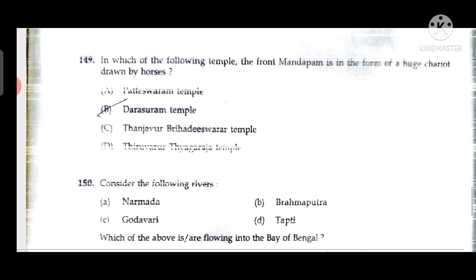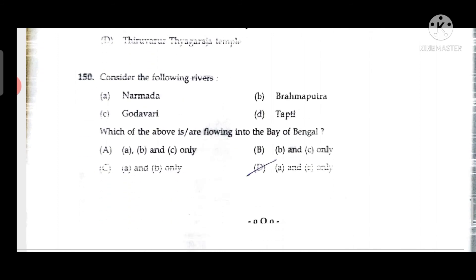Question 149: The temple whose front mandapam is in the form of a huge chariot drawn by horses is the Rameswaram Temple. Question 150: Among the rivers Narmada, Godavari, Brahmaputra, and Tapti — Narmada and Godavari (options A and C) are flowing into the Bay of Bengal.